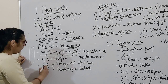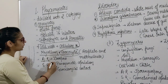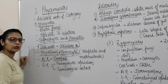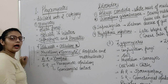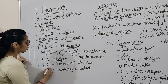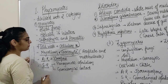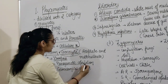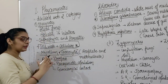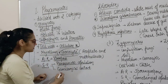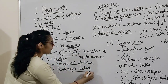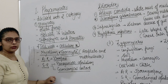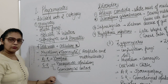Asexual reproduction occurs by zoospores — they are planospores. Sexual reproduction occurs by plasmogamy. The sex organs undergo direct fusion via a fertilization tube.